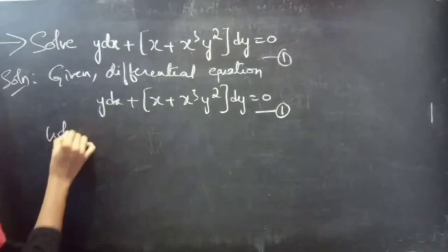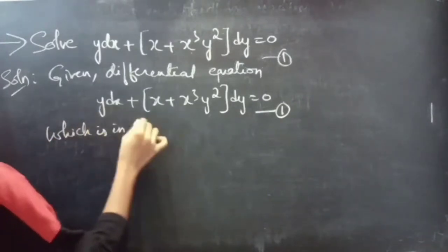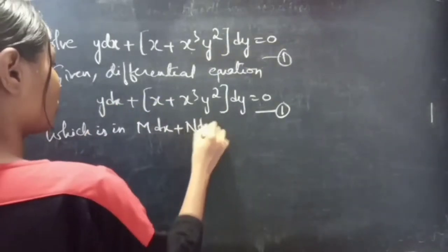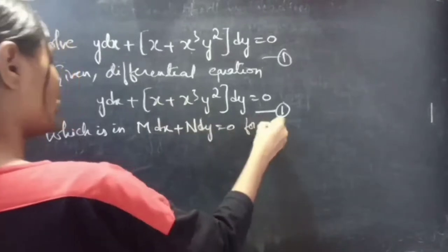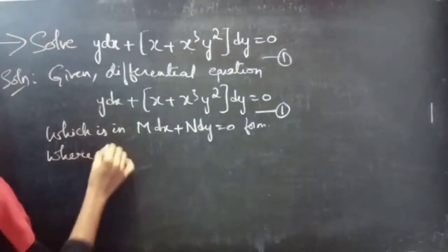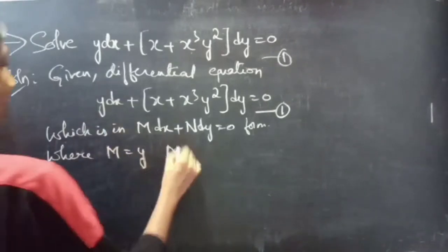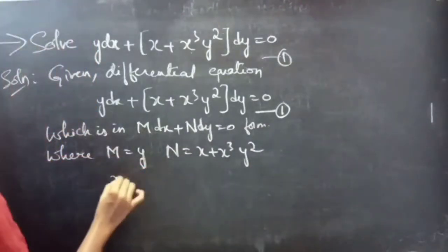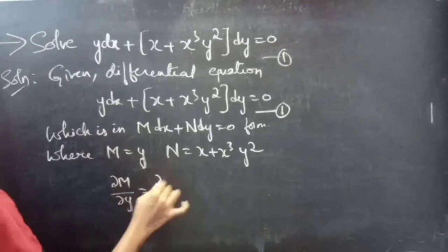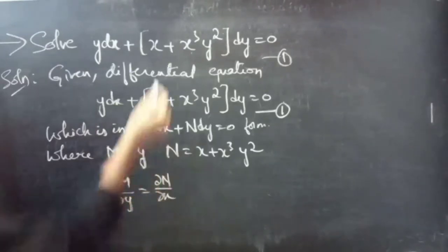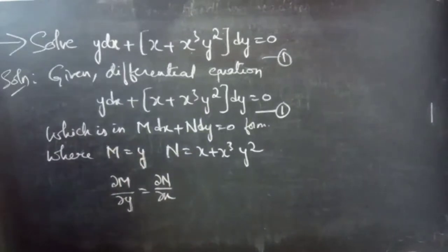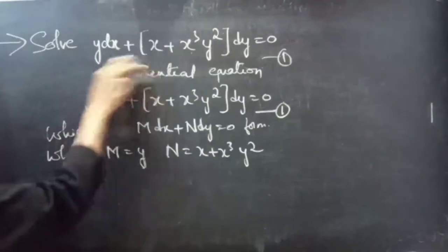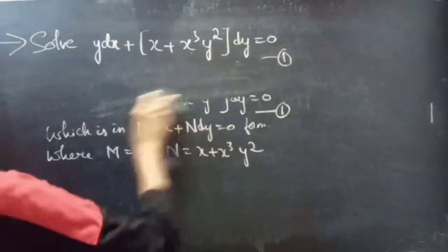This is in the form M dx plus N dy equals to 0, where M equals to y and N equals to x plus x cubed y squared. If the partial derivative of M with respect to y equals the partial derivative of N with respect to x, then the equation is exact. Now we will find both partial derivatives.